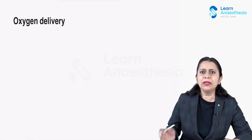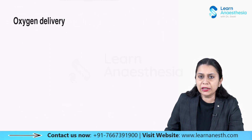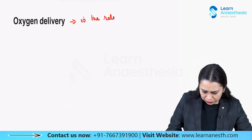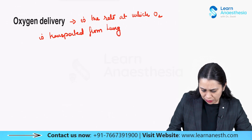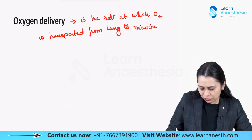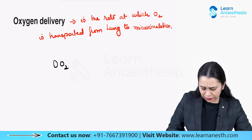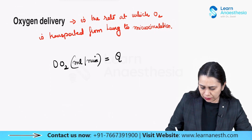Oxygen delivery, or oxygen flux, is the amount of oxygen delivered from lungs to the microcirculation. It depends upon the oxygen content of the arterial blood and also upon the cardiac output. Oxygen delivery (DO2), in ml per minute, equals cardiac output (Q) multiplied by the oxygen content of the arterial blood. With a cardiac output of 5 liters per minute and arterial oxygen content of 20 ml per deciliter, DO2 = 20 × 5000 ÷ 100 = 1000 ml per minute.